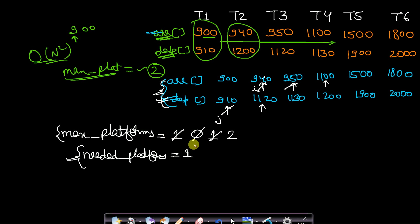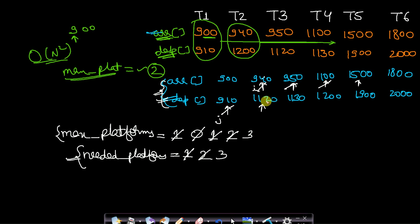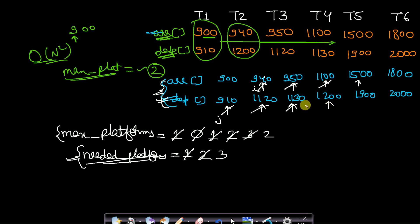Since needed_platforms (1) is lower than max_platforms (2), we update needed_platforms to 2. Next, 11:00 is still lower than 11:20, so yet another train arrives before any departure. We increment max_platforms to 3 and update needed_platforms to 3. Now 11:20 is lower than 15:00, so one train departs and we decrease max_platforms to 2. Since max_platforms is now lower than needed_platforms, we don't update. At 11:30 another train departs, so we decrement max_platforms to 1.